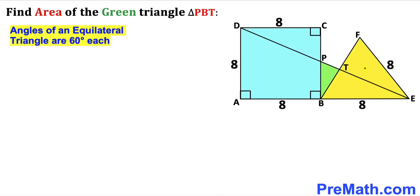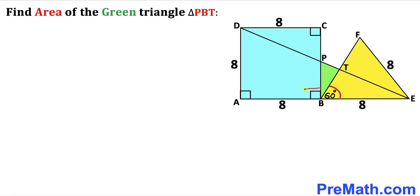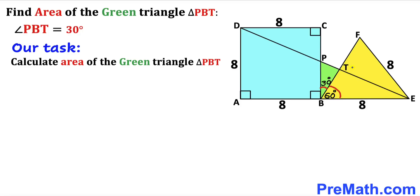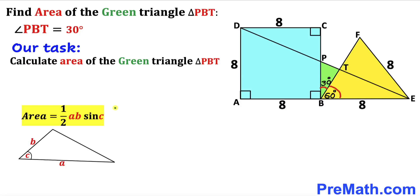Let's focus on this yellow equilateral triangle. We know that each angle of an equilateral triangle is 60 degrees, so this angle is 60 degrees. We also know that this adjacent angle is 90 degrees. Since these angles lie on a straight line summing to 180 degrees: 90 + 60 = 150, so this remaining angle must be 30 degrees. Therefore angle PBT turns out to be 30 degrees.